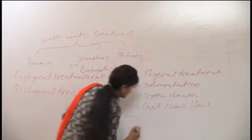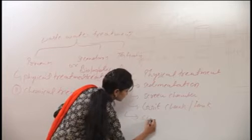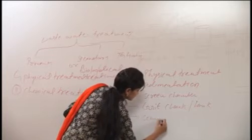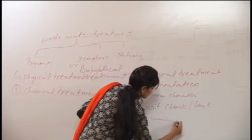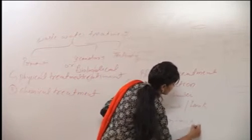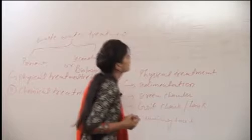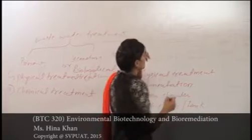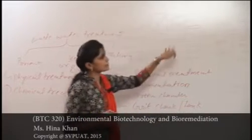The third technique is the grit chamber or tank, and the fourth is the use of a skimming tank. If we look at this diagram, we can see how these components are arranged in the treatment process.